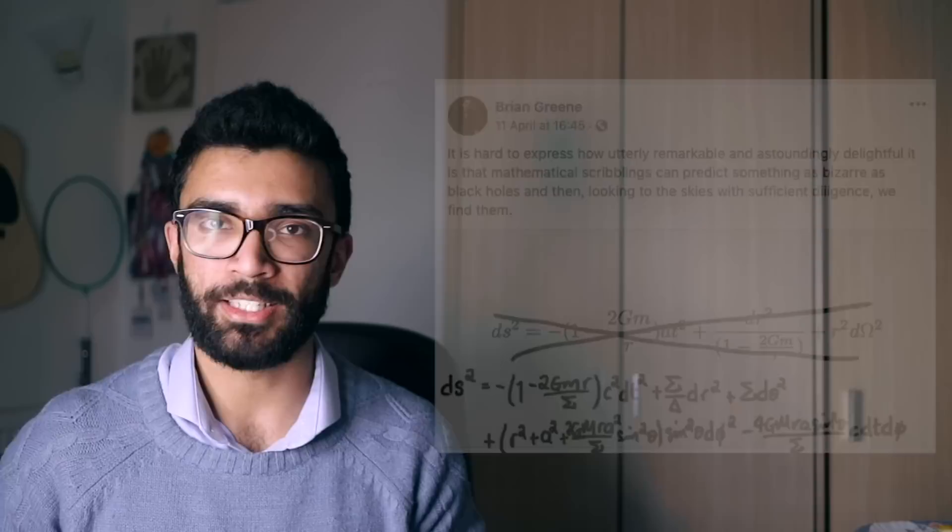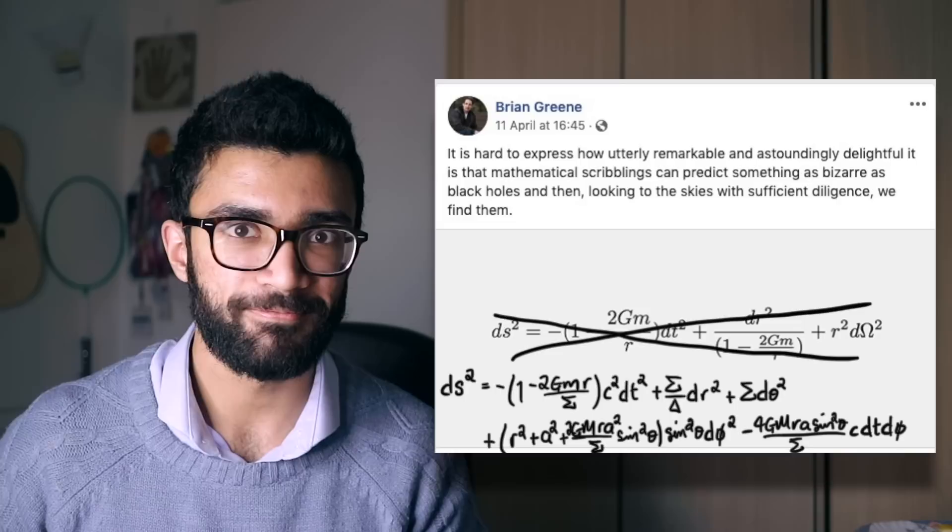Now, something funny — not haha funny, but kind of funny. Brian Greene posted this equation because it's most commonly used to describe black holes, as a response to the announcement of the Event Horizon Telescope's first picture of a black hole. But one of the assumptions is that the spherical object does not rotate. The particular black hole pictured — at the center of the M87 galaxy — is suspected to be a rotating black hole. A rotating body with mass warps space-time differently to a non-rotating body, which means Brian Greene should have posted the Kerr metric equation instead, which deals with rotating spherical objects.